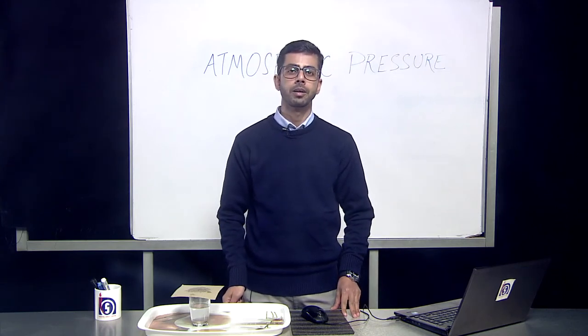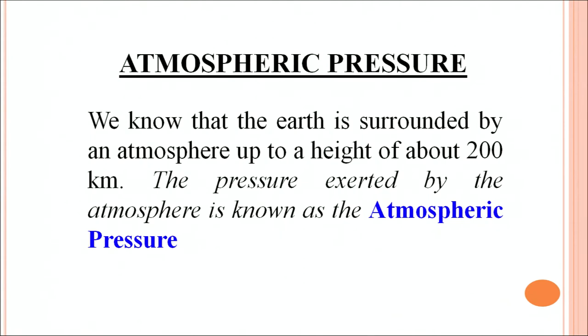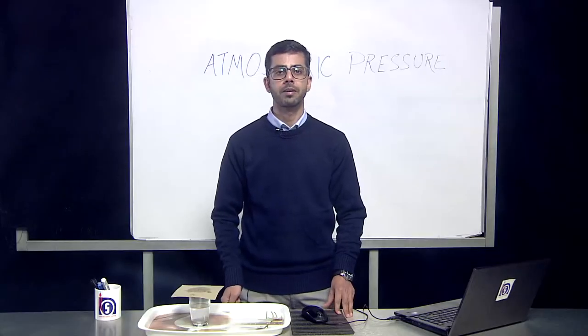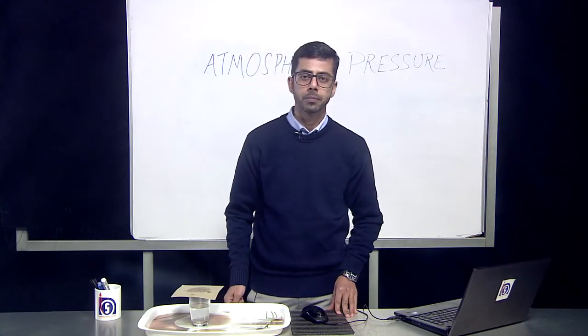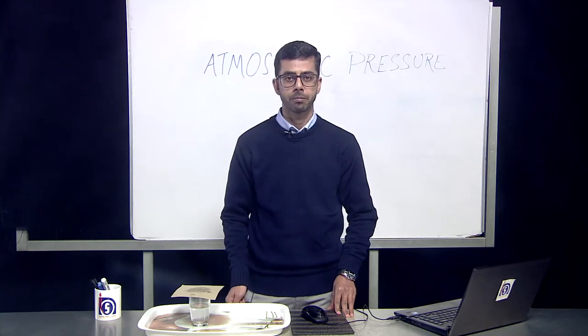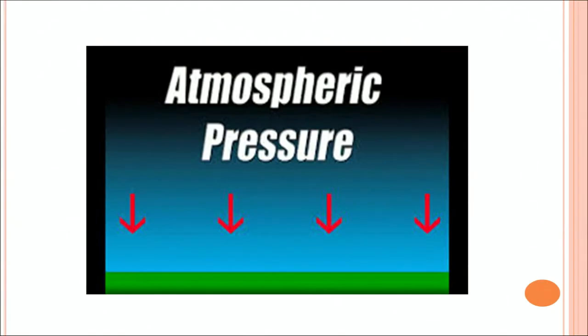We already know that the earth is surrounded by an atmosphere up to a height of 200 kilometers, and this atmosphere is made up of the combination of different gases. Therefore, the pressure exerted by the atmosphere is known as atmospheric pressure. In the diagram you can see the atmosphere is applying a pressure over the ground which is labeled by the green color, and if people or any object on the ground is lying then the atmosphere is applying a pressure on that particular thing also.